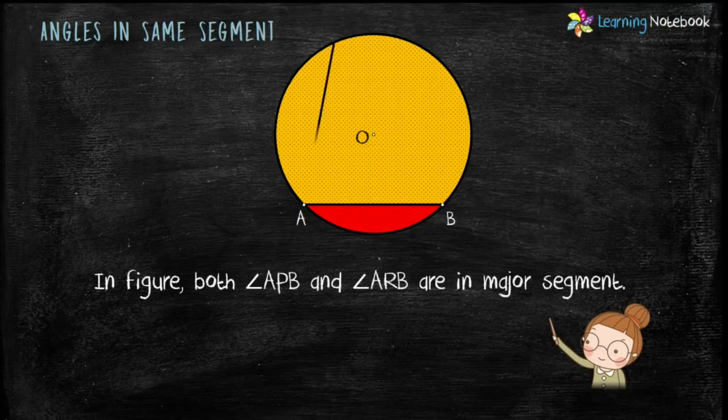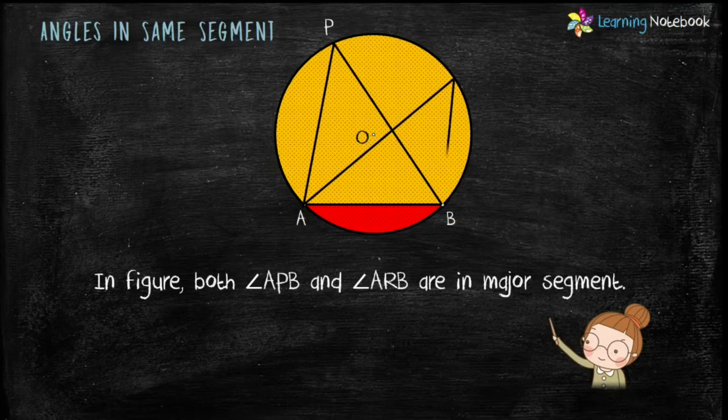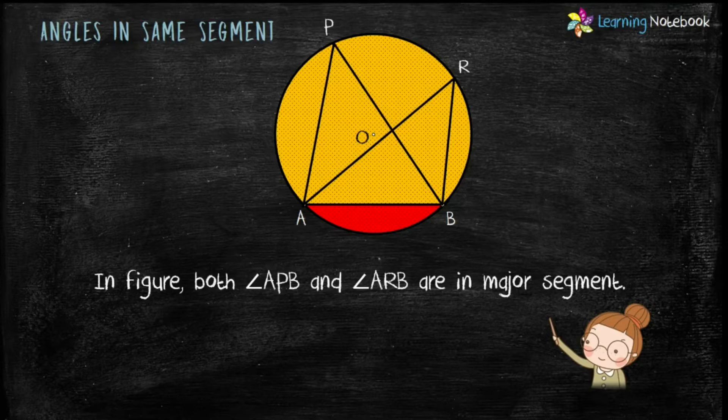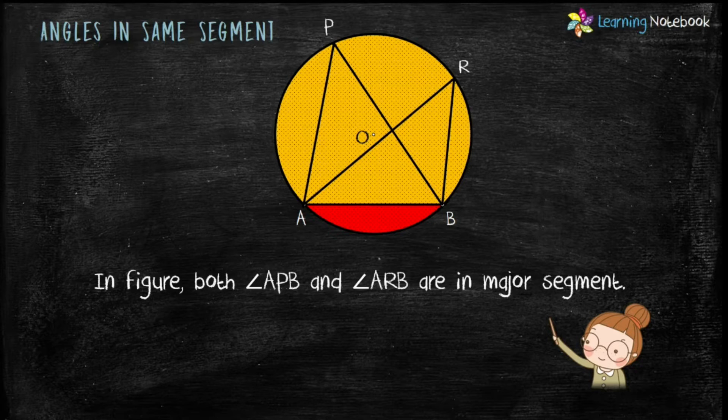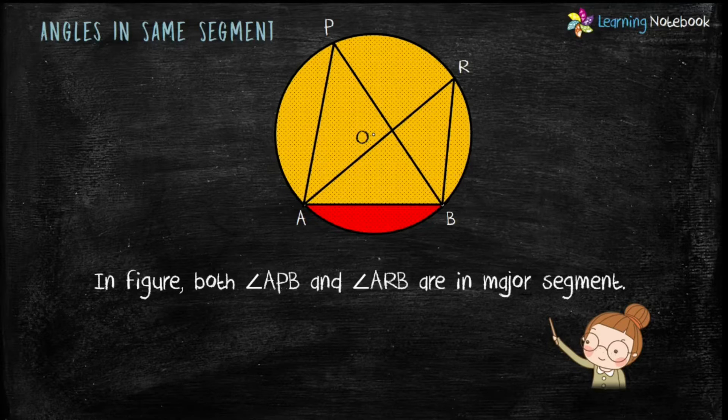Now students, if we draw both the angles angle APB and angle ARB in one of the segments, then these angles are called angles in same segment. Let's verify if the angles in same segment of a circle are equal through an activity.